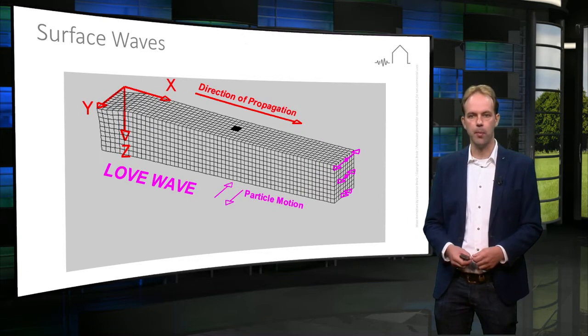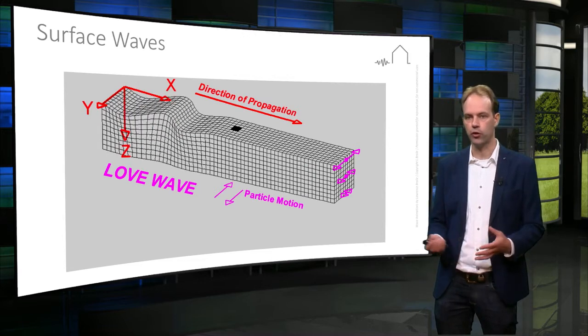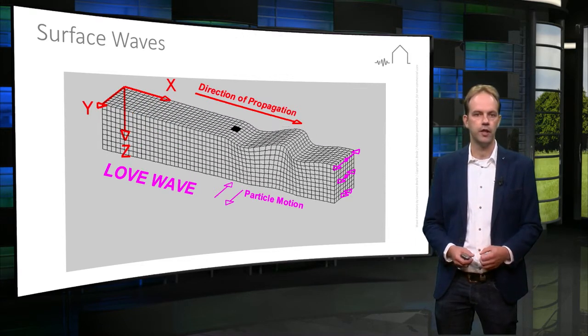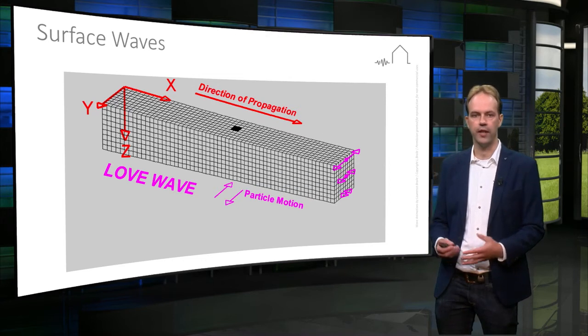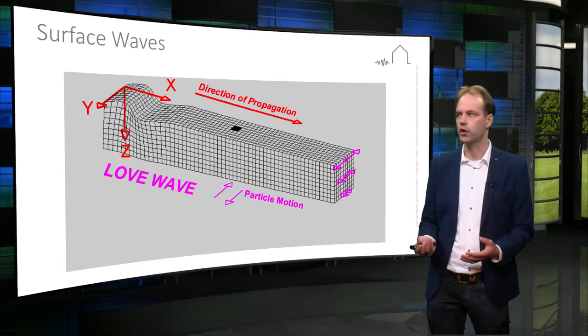Because of their complex particle motion patterns and because of their typically very large amplitudes, these surface waves are the most destructive waves that cause most of the damage to buildings and structures at the surface of the earth.